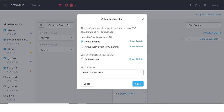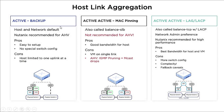Those are the different options in the uplink configuration: active-backup, active-active with MAC pinning, and active-active with LAG. You also choose the network configuration for 10 gigabyte or other network adapters. Looking at the diagram for active-backup, we use one Ethernet to send all traffic — from the host, CVM, and virtual machines. All data traffic is sent through this physical network adapter to switch one.